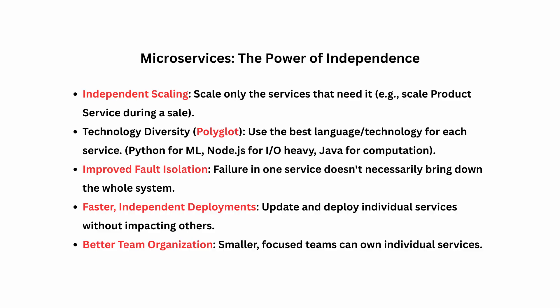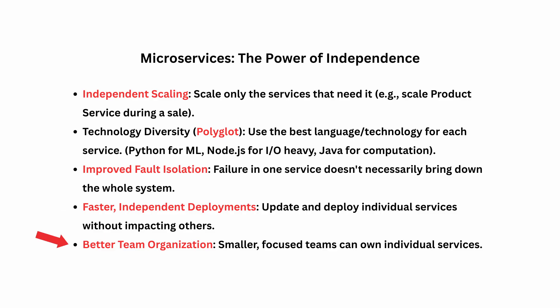Microservices bring some powerful advantages where monoliths fall short, especially for larger and more complex applications. You can scale services independently — for example, if the order service is getting extremely popular due to a flash sale, you can scale just that service without touching the others. You also have technological diversity: want to use Python for your recommendation engine and Java for your payment service? Go for it. It also has better fault protection — if the recommendation service goes down, users can still browse products and place orders. You can also have faster, independent deployments, and this often leads to better team organization with smaller, more autonomous teams owning their services end-to-end.